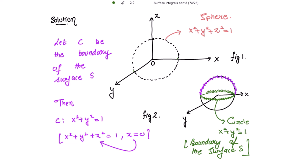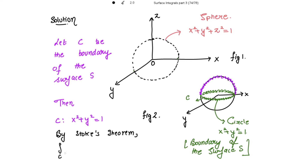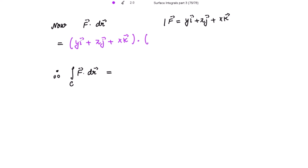By Stokes' theorem, the line integral over C of f vector dot dr vector is equal to the surface integral of curl of f vector dot n vector ds. Let's evaluate this first. Now f vector dot dr vector — f vector is given as yi + zj + xk.